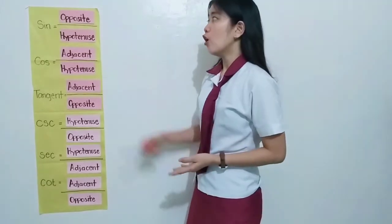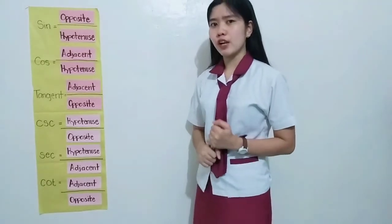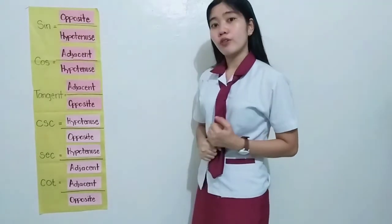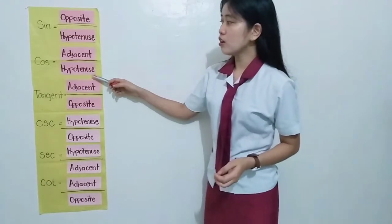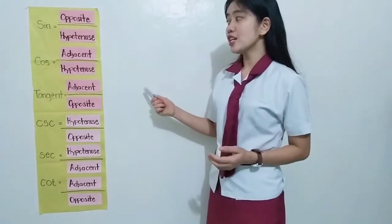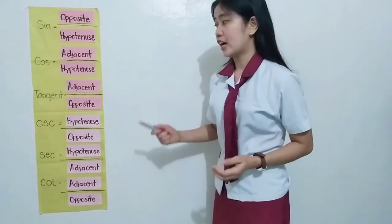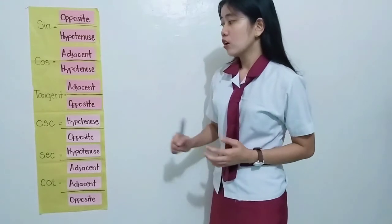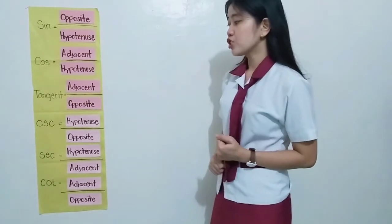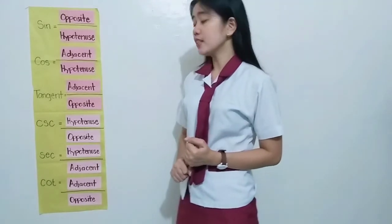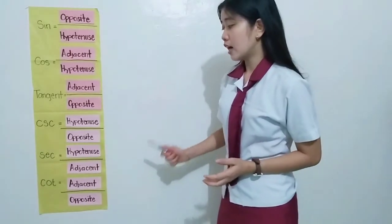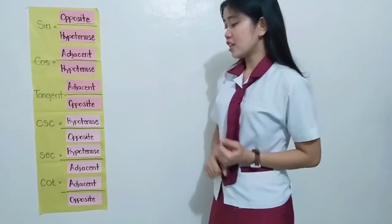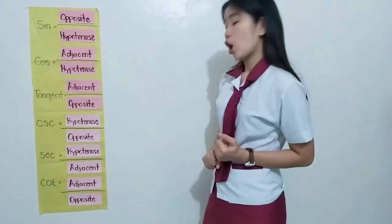These are the formulas for the six trigonometric functions: sine is opposite over hypotenuse; cosine is adjacent over hypotenuse; tangent is opposite over adjacent; secant is hypotenuse over adjacent; and cotangent is adjacent over opposite.